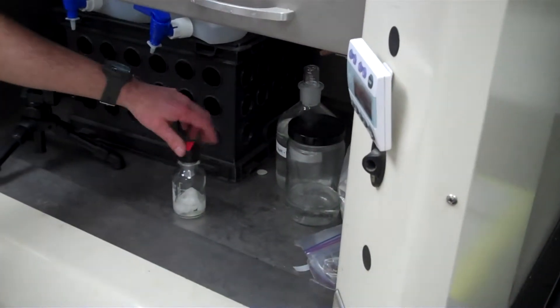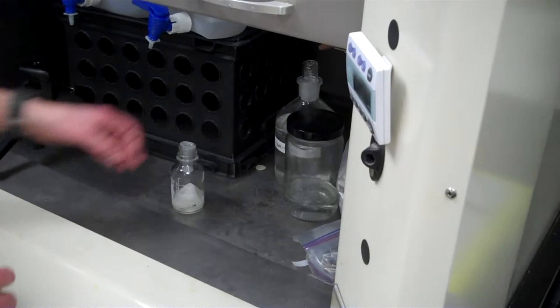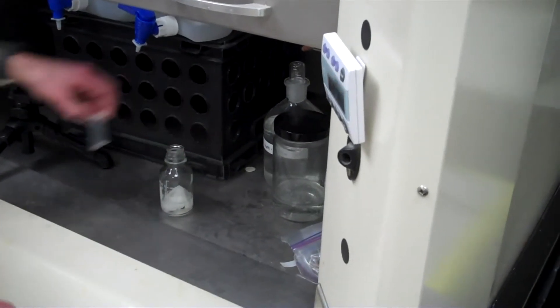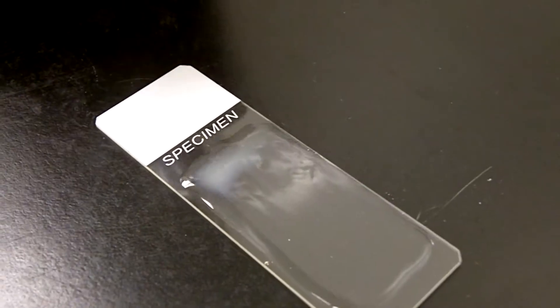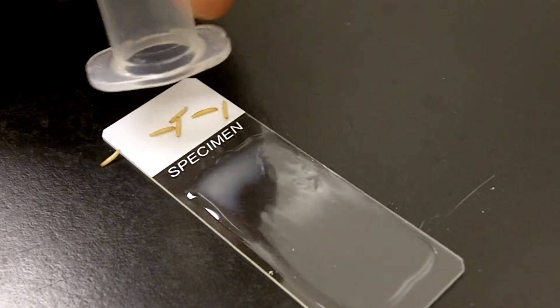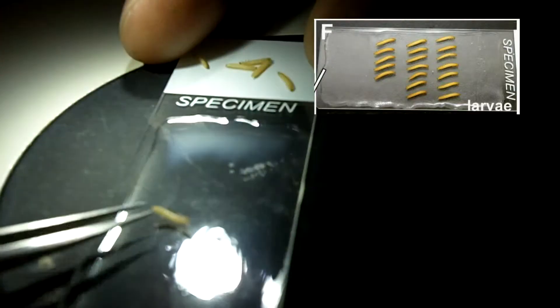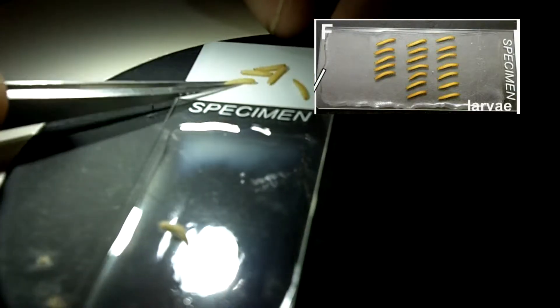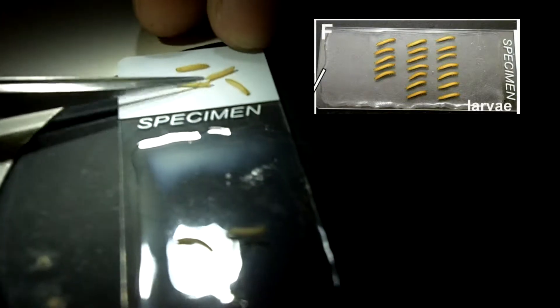The etherized larvae are now mounted onto a slide that was prepared the day before. In the corner you see the way they're supposed to look. But this is Rainey's first try so you can give him a break.